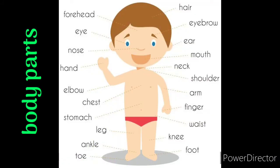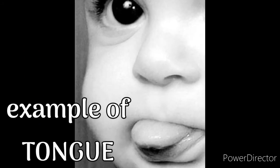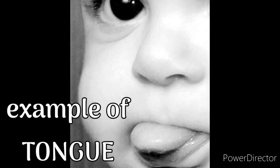These are the body parts you know: forehead, eye, nose, hand, elbow, chest, stomach, leg, ankle, toe, hair, eyebrow, ear, mouth, neck, shoulder, arm, finger, wrist, knee, foot, belly, etc. We are just giving examples of our body parts to show something else. Kuch cheezein dikhane ke liye haam apna body parts ko example mein lete hain. Chalo, aapki jo doubt hai isko clear karne ke liye haam examples lete hain.